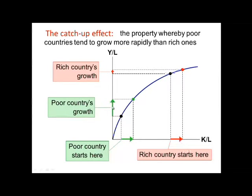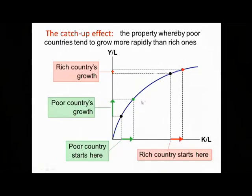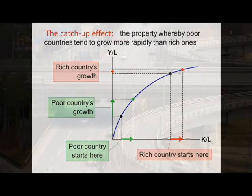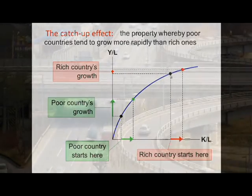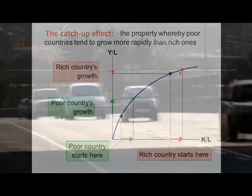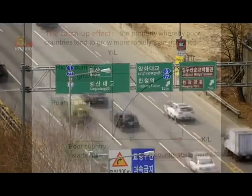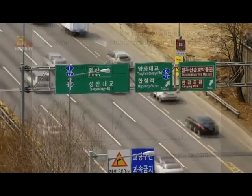With countries of low per capita incomes, an increase in any of the factors of production creates a big growth rate. Nevertheless, eventually countries' growth rates start to diminish, and no matter how much they increase labor or capital added to the economy, the returns are not as big as expected. This is when growth slows down.